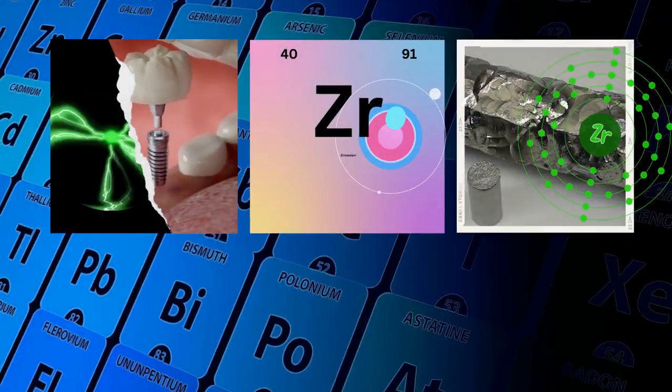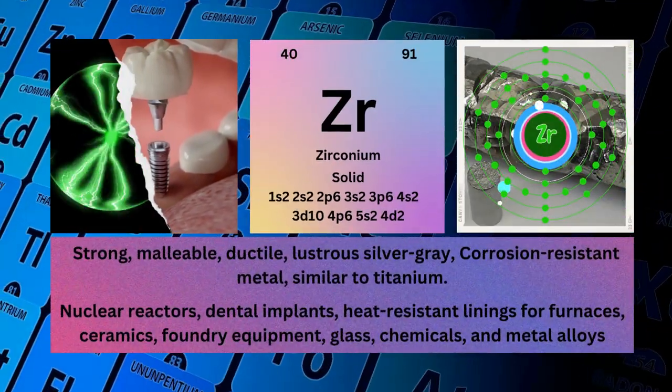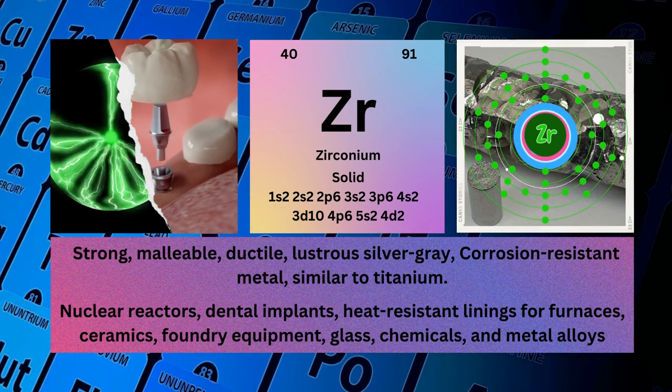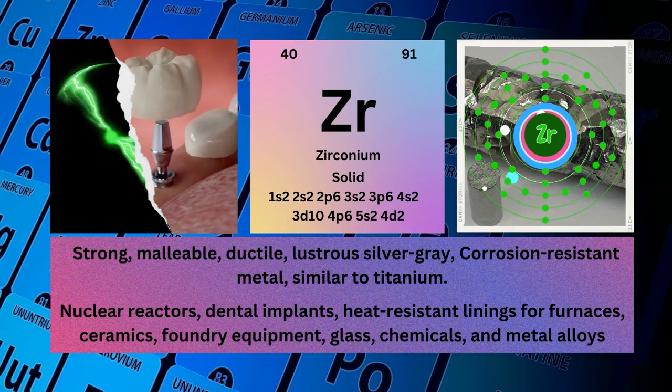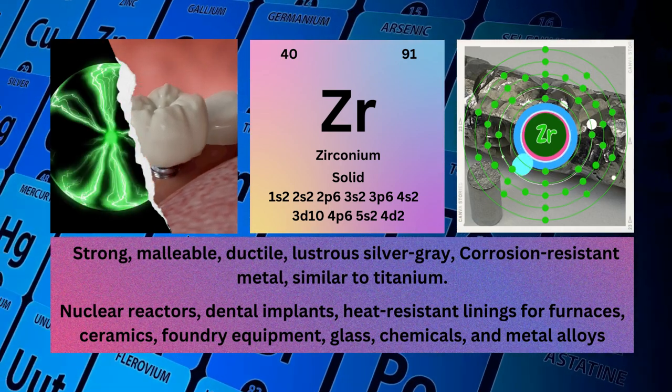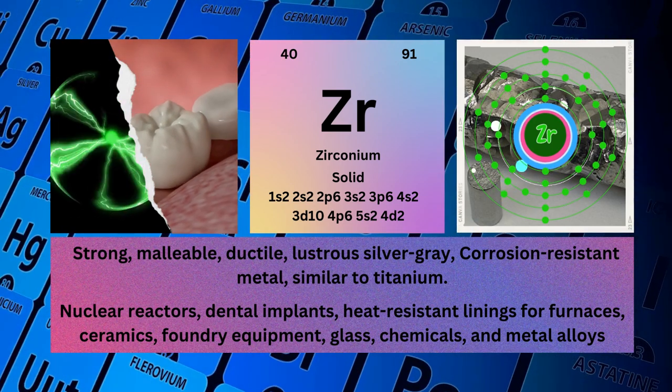Zirconium. Atomic number 40. Mass number 91. Symbol: Zr. State: solid.